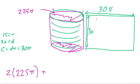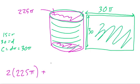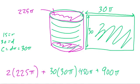So to find the area of this rectangle, because we're finding surface area, and we want to find the area of all the faces, we take 30 and multiply it by 30 pi. Now, what we do is 30 times 30 pi, that's 900 pi, right? And we add 450 pi to that, right? Because 2 times 225 is 450.